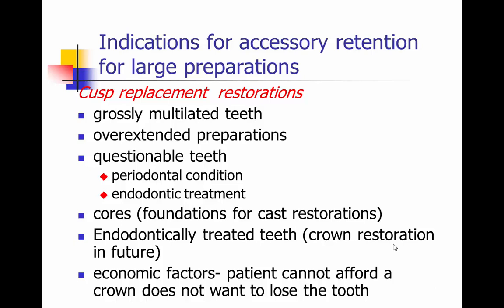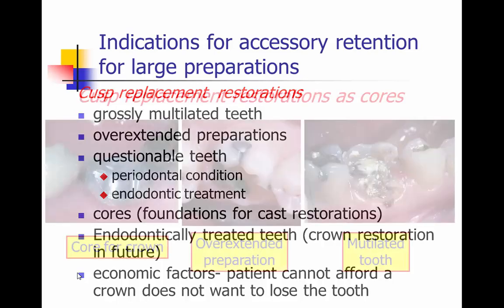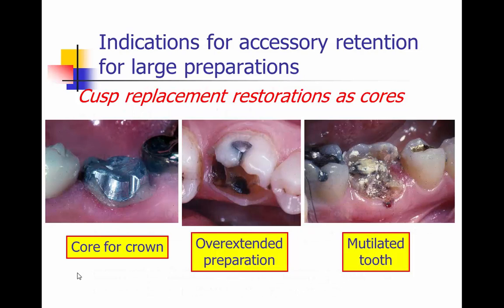So when do we need accessory retention for large preparations? We're doing a cusp replacement restoration on a grossly mutilated tooth, overextended preparations, teeth that are questionable due to periodontal condition or endodontic treatment. We're doing cores and foundations for cast restorations, endodontically treated teeth where a crown is the future definitive restoration. But also for cusp replacement restorations, there are economic factors where the patient can't afford a crown but doesn't want to lose the tooth, so we need to do a large restoration and consider what will provide retention form.